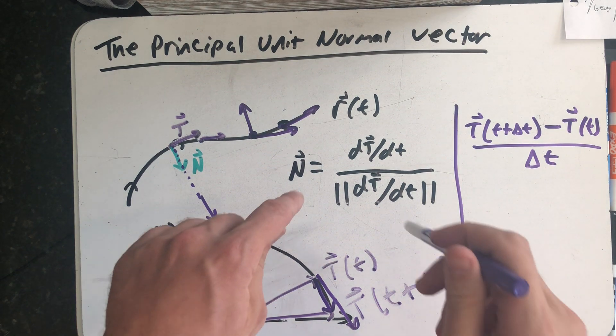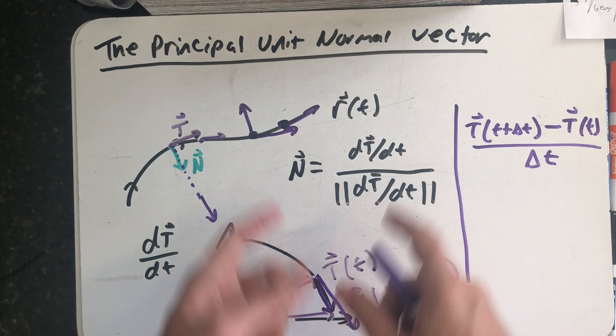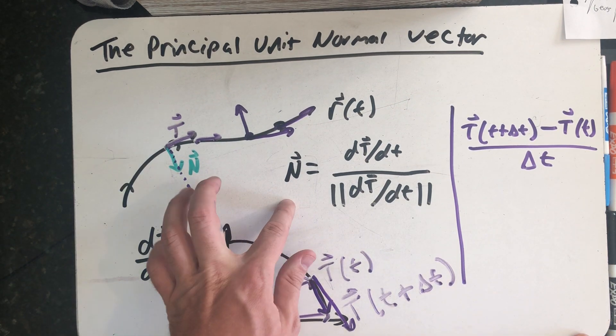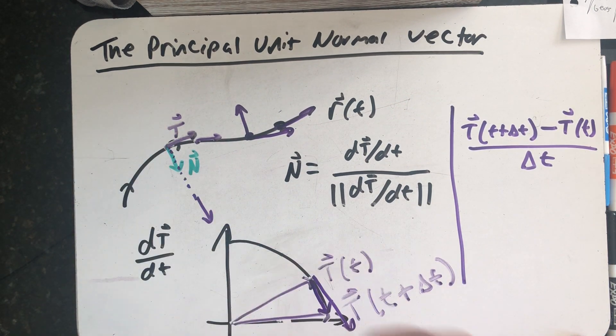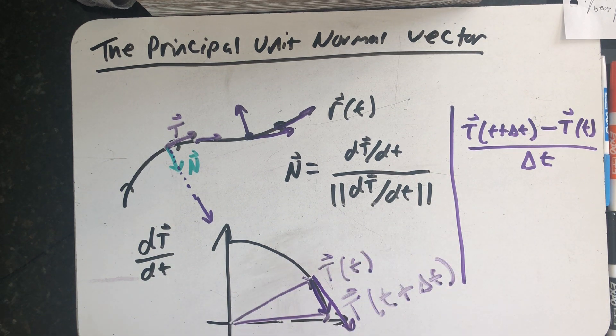So we have a perfectly good definition formula for the principal unit normal vector. Sometimes I'm just going to call it the normal vector. The normal vector big N is perpendicular to big T and is one unit long. I like to take this both as my calculation formula and as my definition formula.